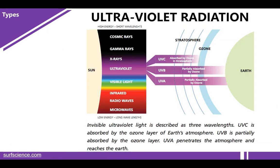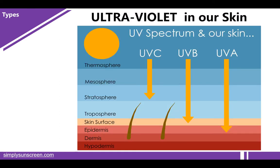There are three types of ultraviolet radiation. UVC is absorbed by the ozone layer in the stratosphere. UVB is partially absorbed by ozone. UVA is also partially absorbed by the ozone. Regarding effects on our skin: UVC is blocked in the stratosphere by our ozone layer, but UVB damages the skin surface while UVA penetrates the skin up to the epidermis.